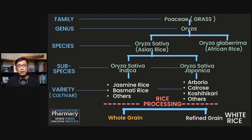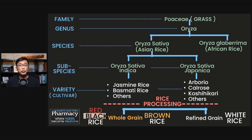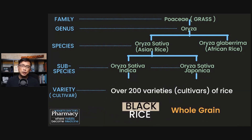Likewise, whole grain rice can come from any of the thousands of different varieties or cultivars of rice. But because most varieties of rice consumed around the world are brown before their bran and germ layers are removed during processing into white rice, people tend to use the term brown rice interchangeably with whole grain rice — which is not quite correct, because whole grain rice can also come in other colors such as red or black.